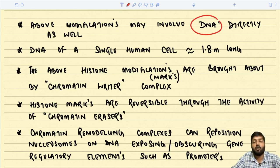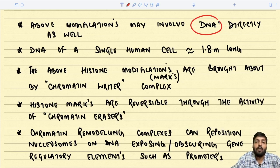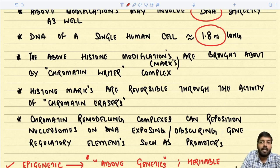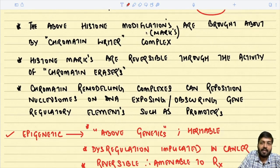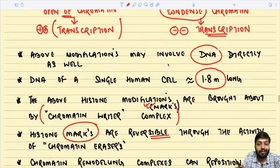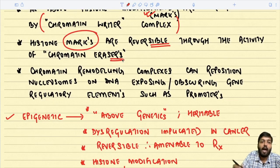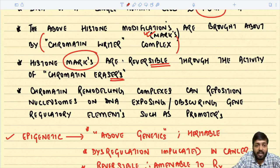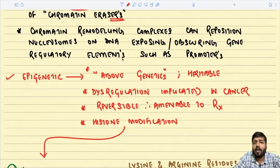Sometimes modification can directly involve the DNA — for example, DNA methylation — which can regulate DNA expression or condensation. The DNA of a single human cell is approximately 1.8 meters long. Histone marks such as acetylation or methylation are brought about by chromatin writer complexes. As there are chromatin writer complexes causing histone modifications, there are also chromatin erasers which can erase whatever marks are there.